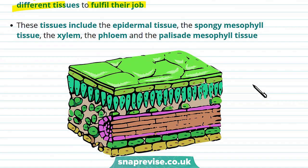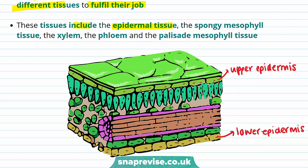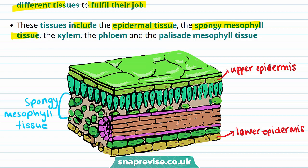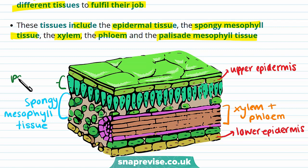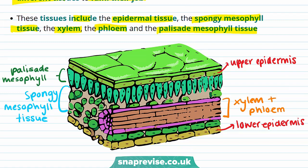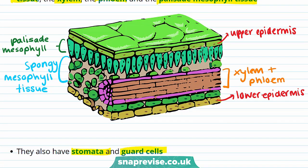Some of these tissues include the epidermal tissue, which includes cells in the upper epidermis as well as cells in the lower epidermis. Plant cells also have spongy mesophyll tissue in their leaves, shown in this layer here. Plant cells also have a xylem and a phloem, which make up the vascular bundles of the plant. Another tissue in the leaf is the palisade mesophyll tissue, shown as this layer of cells. Leaves also have stomata and guard cells, which are present on the underside of the leaf.